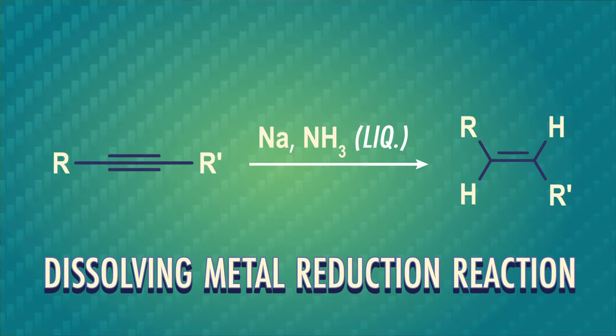Now we've seen alkanes and alkenes, but we can't forget about alkynes. Specifically, the dissolving metal reduction reaction produces E-alkenes from alkynes. The dissolving metal part of the name comes from two reagents that you can see above the reaction arrow.